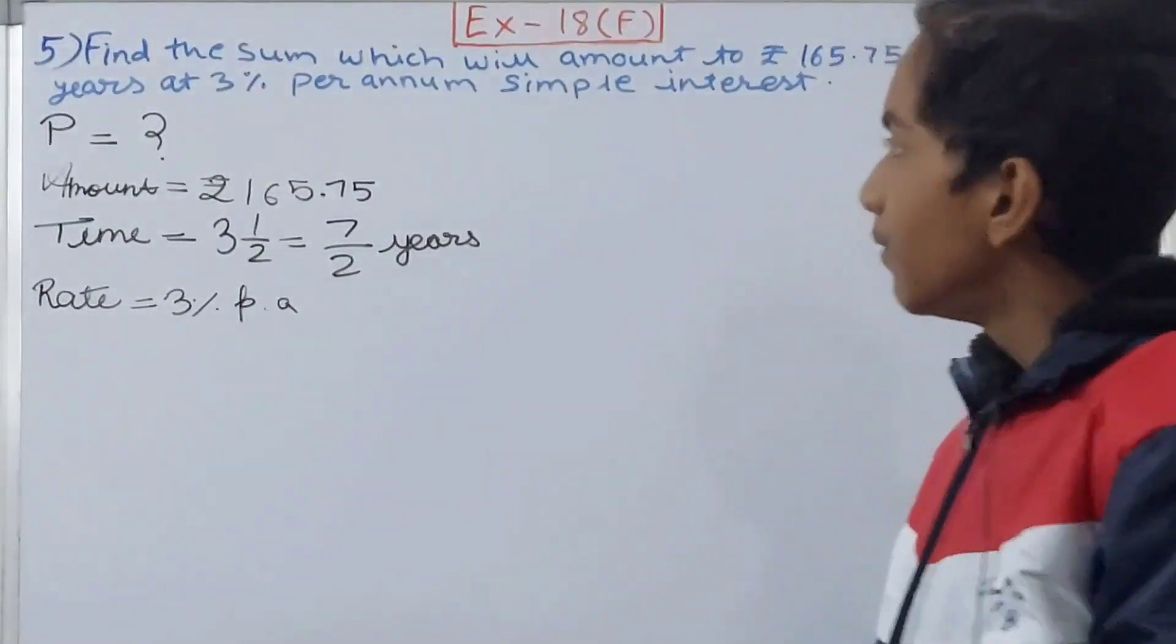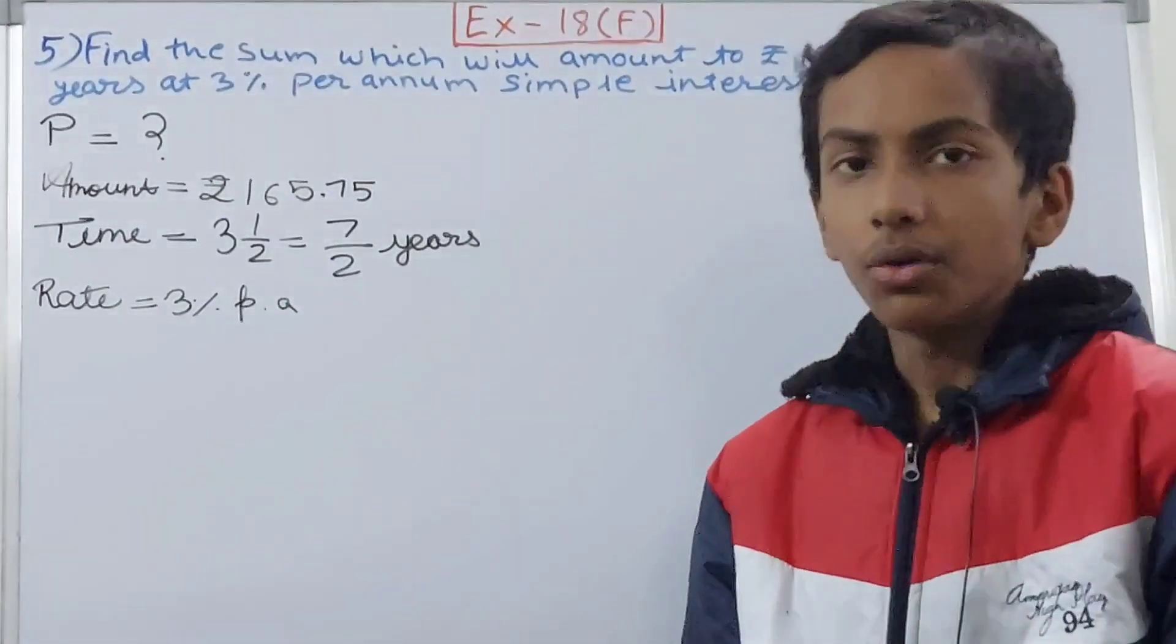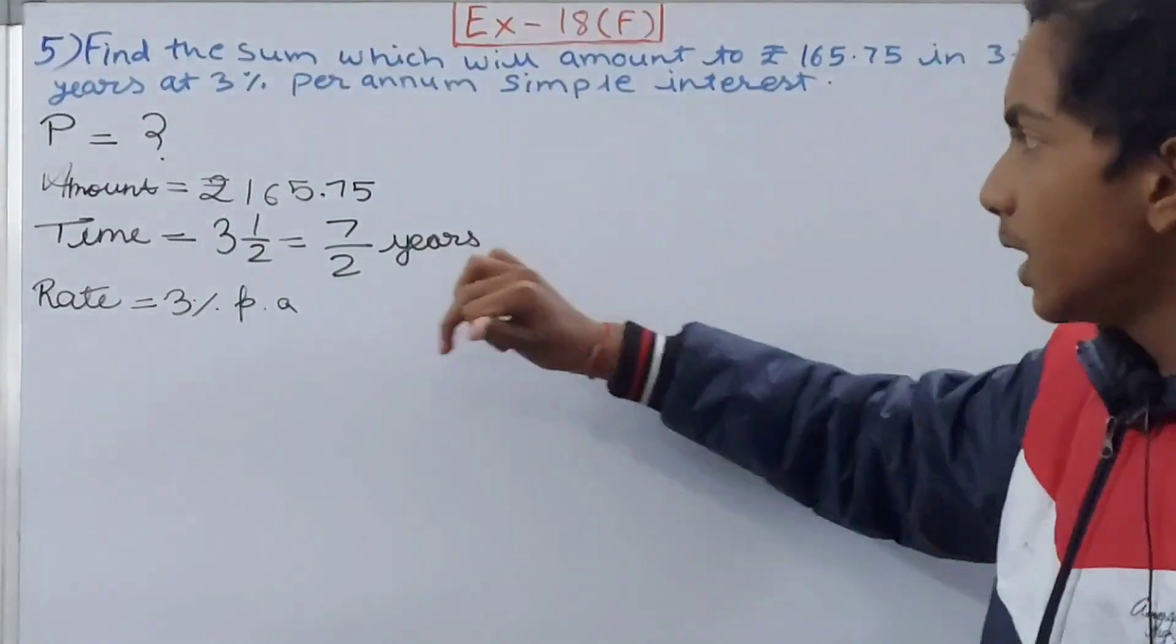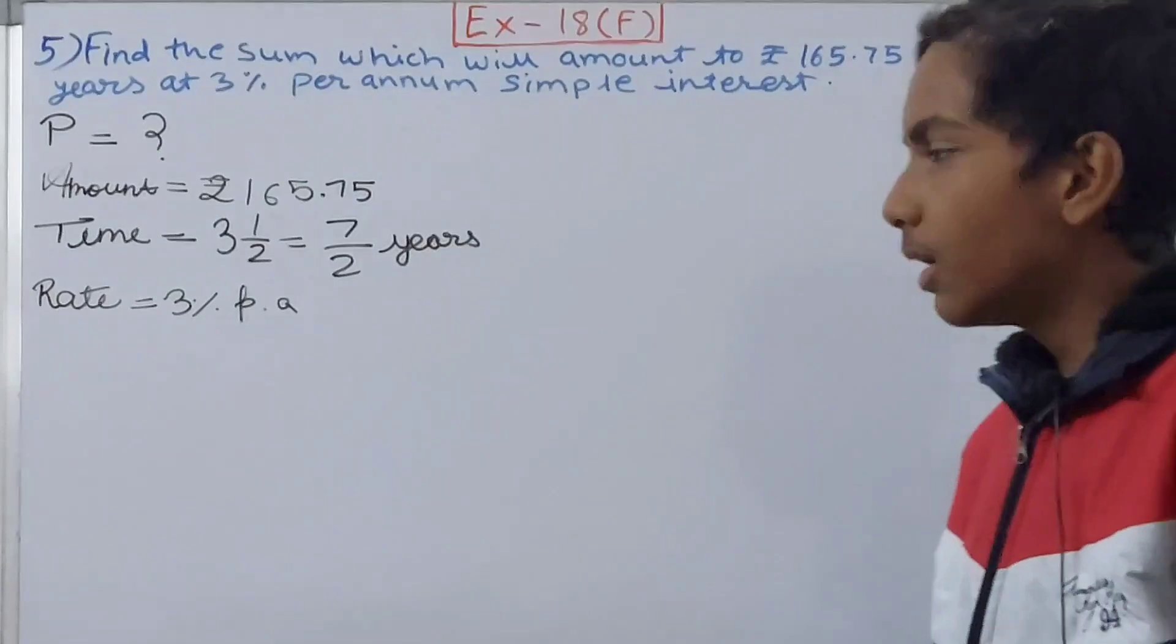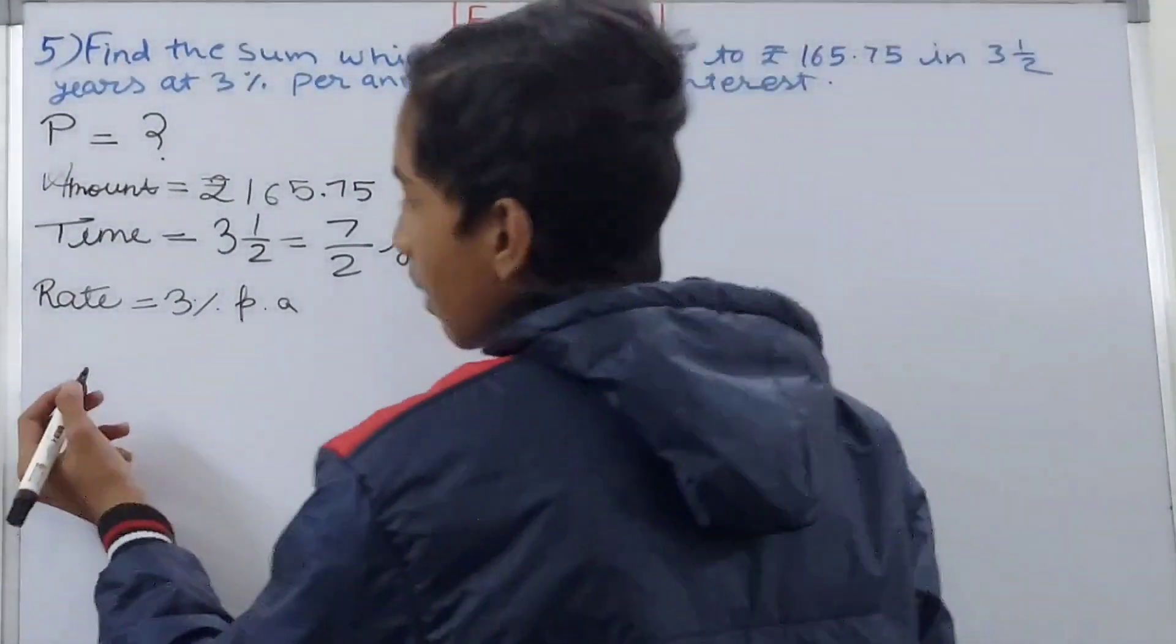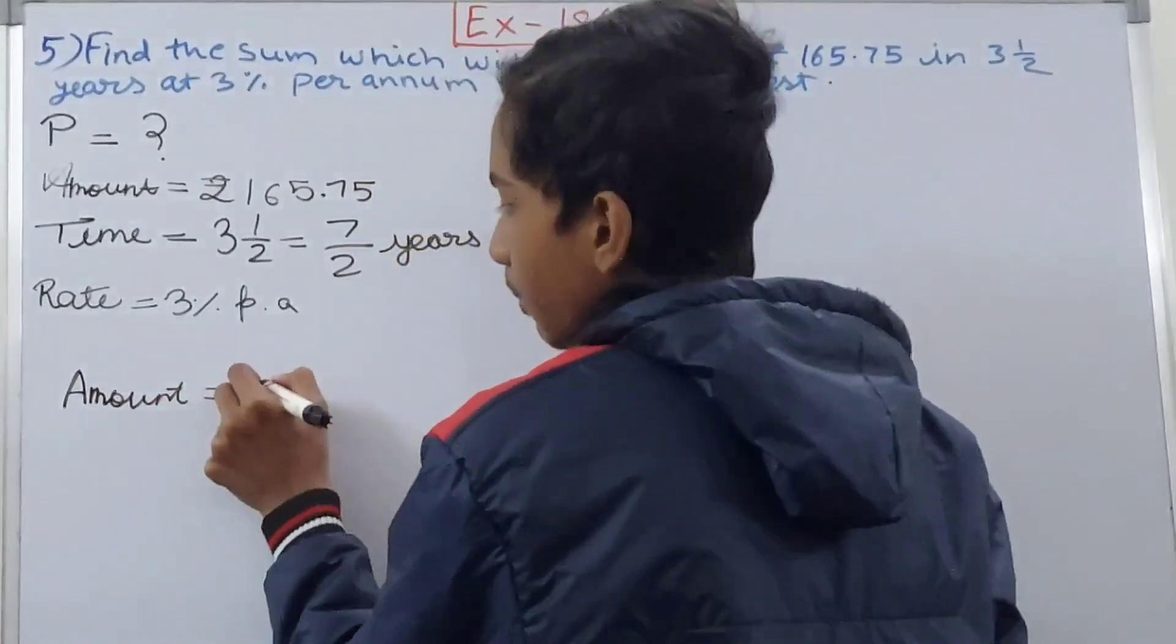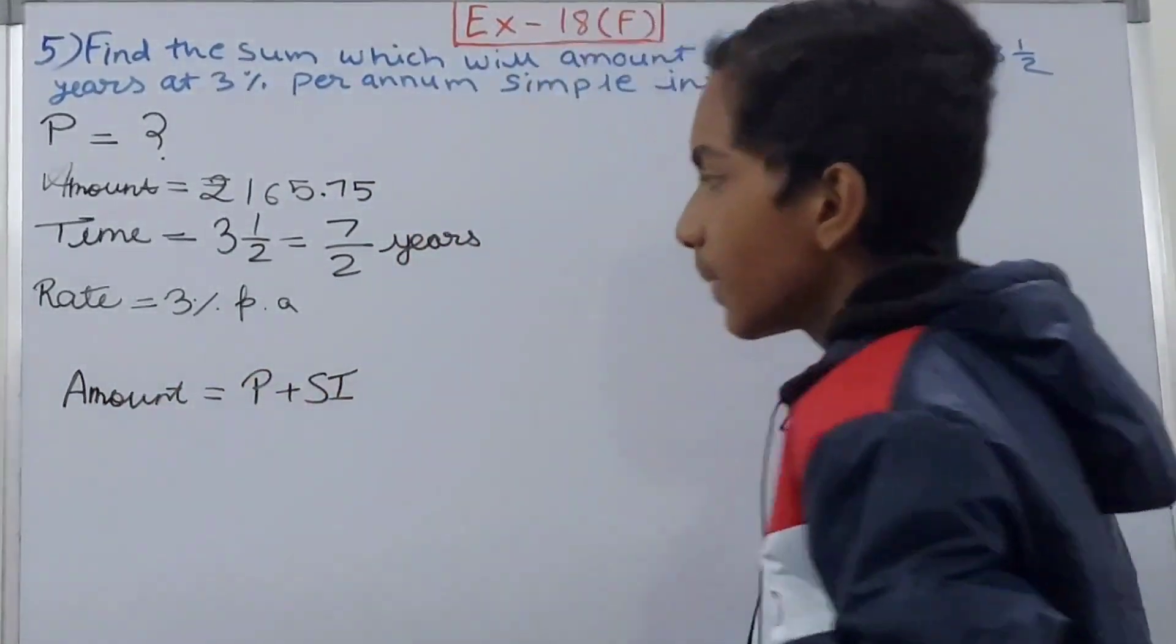Here we can use one formula for finding the amount. We will not use the formula for finding simple interest here because we don't know the principal only, and that will be a longer process. I'll do it with a shorter one. We know that the amount equals the principal plus the simple interest.